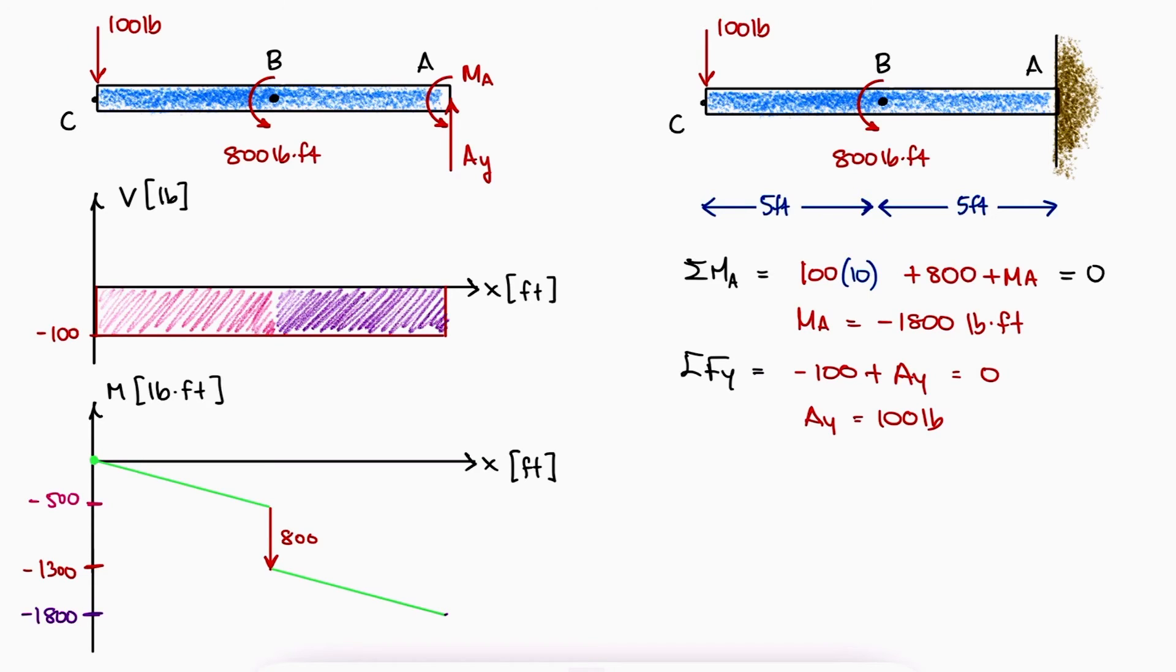At A, we find the reaction moment MA that is actually negative and therefore clockwise, which would cause a reaction that is positive and therefore counterclockwise that we plot in our bending moment diagram going up.